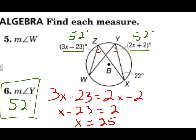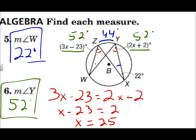For question 5, the measure of angle W: angle W opens up to arc ZY, and angle X also opens up to arc ZY, which means angle W and angle X are congruent — so they're both 22 degrees. Another way: angle X is half of arc ZY, making arc ZY 44 degrees, which means angle W is half of 44, which is still 22 degrees. Inscribed angles that open up to the same arc are congruent.